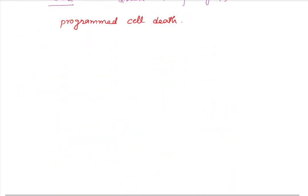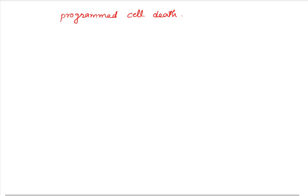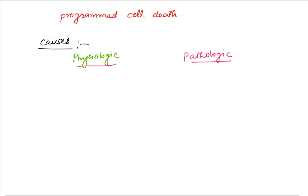Moving ahead, we will see the situations in which apoptosis occurs. There are two conditions — physiologic and pathologic. Talking about physiologic conditions, one important situation is during embryogenesis, where the destruction of cells takes place with the help of apoptosis.